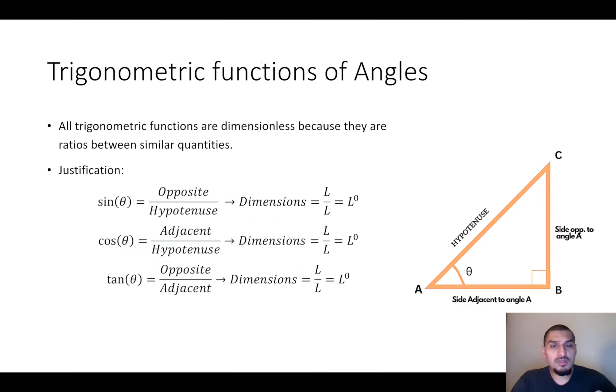One other thing for the trigonometric functions. We know that trigonometric functions, the sine, cosine, and tan, they are a ratio between two angles. Either it's the opposite over hypotenuse or adjacent over hypotenuse or opposite over adjacent, whatever the two sides. It's ratio between two similar quantities, so they are all dimensionless.